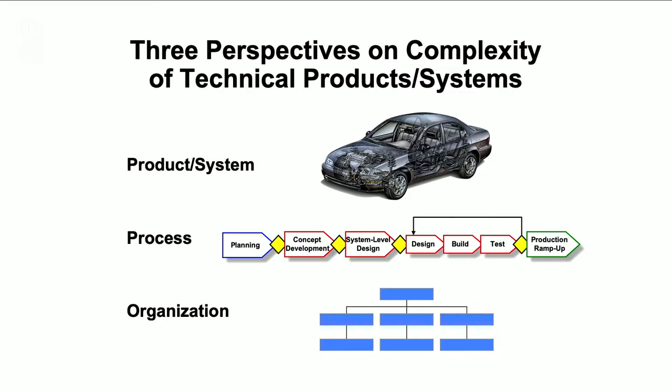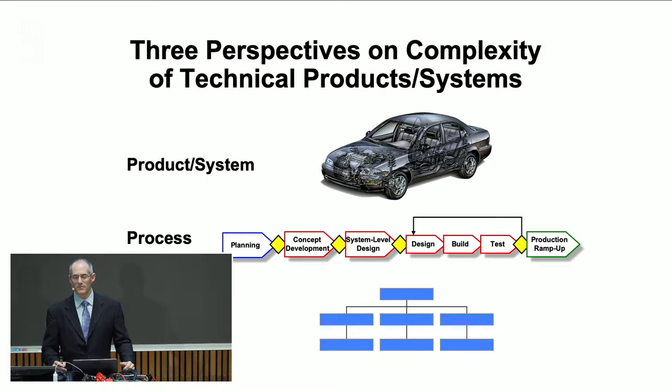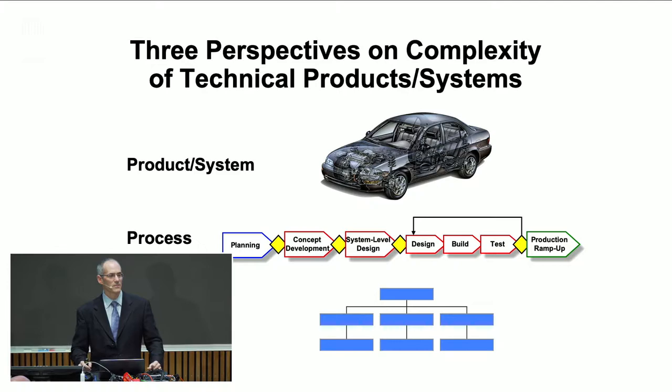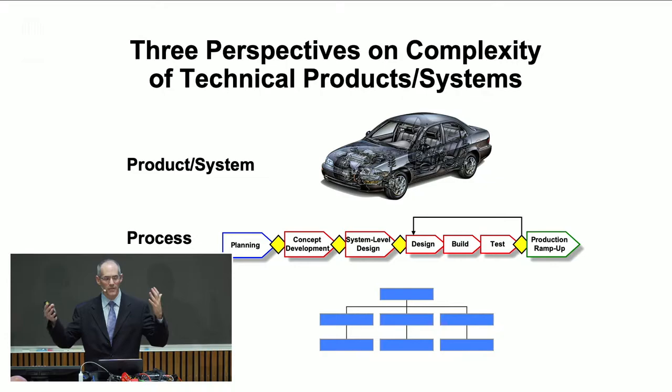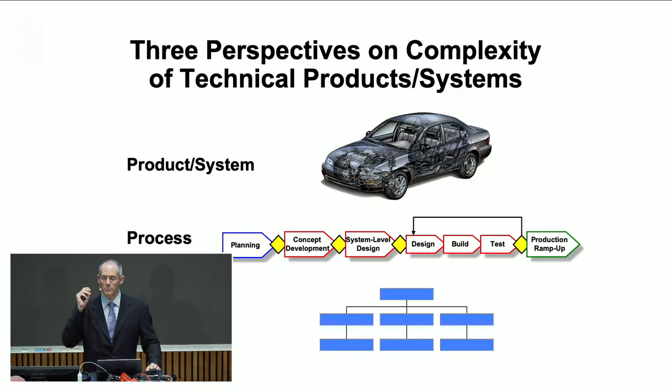I'd like to start by explaining our approach to studying complexity. These systems are complex not just because they are of large scale and scope — that large scale and scope leads to complexity in three fundamental domains: the product, the process, and the organization. The product itself is complex with many pieces and components that must work together. The process may be a network of thousands of activities or tasks. The organization is large, probably complex in terms of interfaces. We explore the architecture in each of these domains.